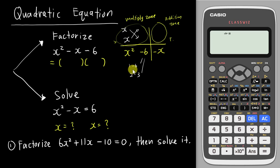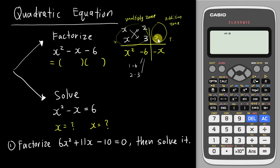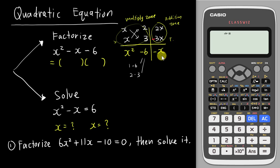I ask myself: 1 and 6, the difference between these two numbers is 5. But 2 and 3, the difference between them is 1. So I want to get 1x, so I choose 2 and 3. X multiply 3 gives 3x, and x multiply 2 gives 2x. To get negative 1x, I put a negative on 3, because 2x plus negative 3x gives negative 1x.